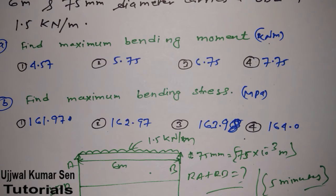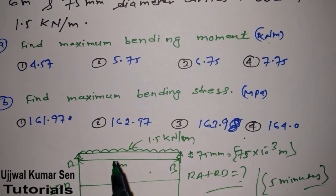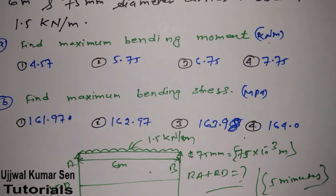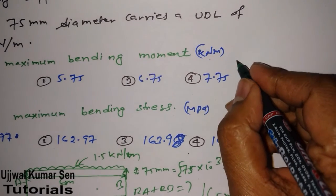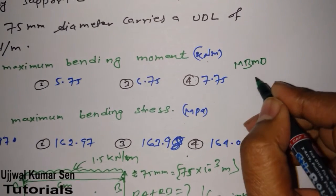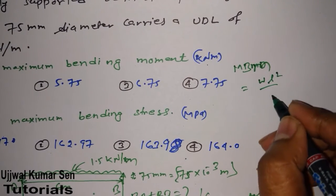Maximum bending moment can be achieved at only one place — that is when shear force is zero, the bending moment is maximum. If shear force is not zero, it depends on other factors. Since we have a UDL on a simply supported beam, there is a direct formula for finding maximum bending moment: M_max = wL² / 8.